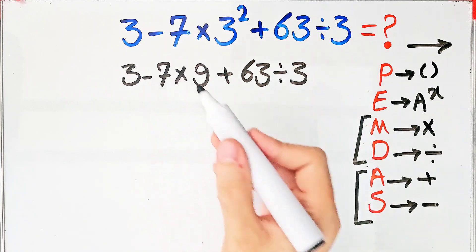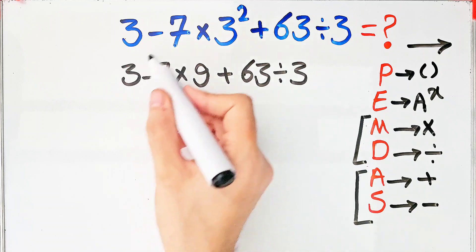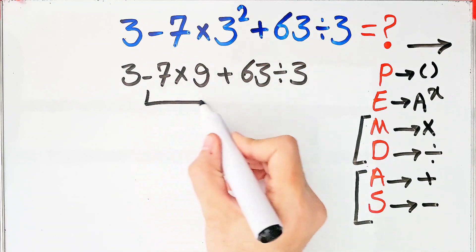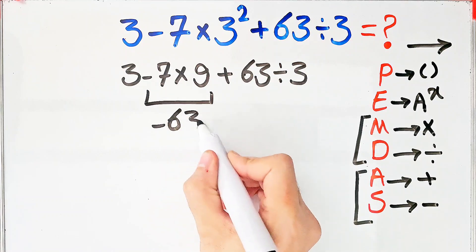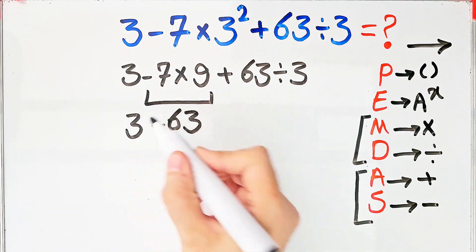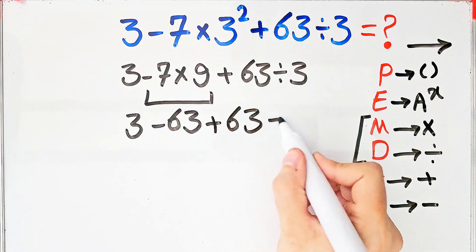Now we have subtraction, multiplication, addition, and division. First, we do this multiplication. Negative 7 times 9 equals negative 63. Now we have 3 minus 63 plus 63, then divided by 3.